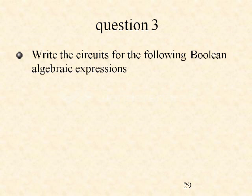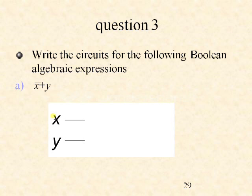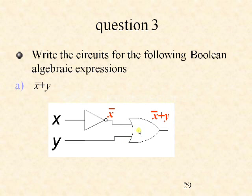Write the circuits for the following Boolean algebra expressions. We have to design a circuit for x complement plus y. To get x complement we use a NOT gate with input x, giving x complement. Then x complement and y are given as inputs to an OR gate, giving x complement plus y.